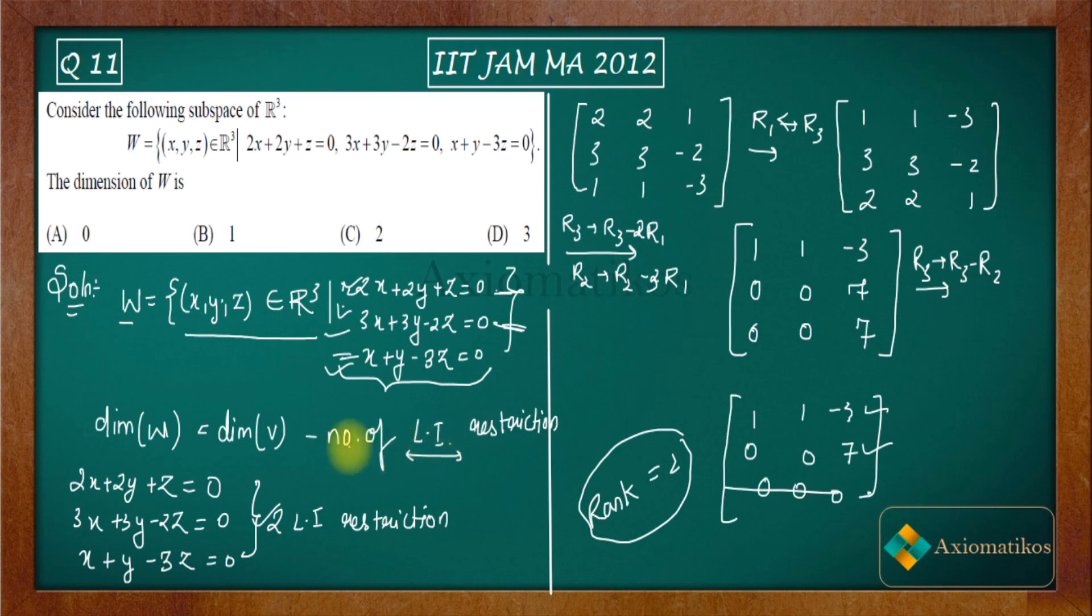Now what will be the dimension? Dimension of V - what is dimension of V? What is V? V is your R cube, that means 3. How many restrictions do you have? Two. That means what will be the dimension? Dimension will be 1. So B is your correct answer.